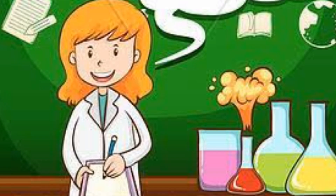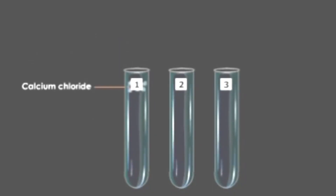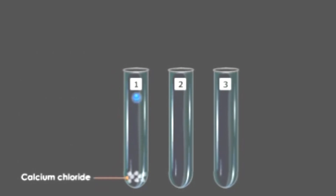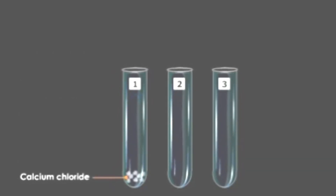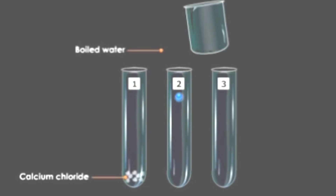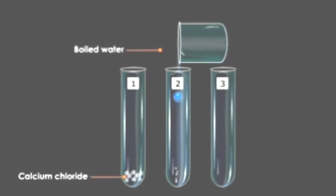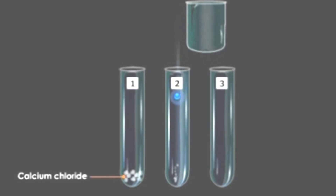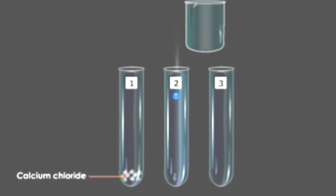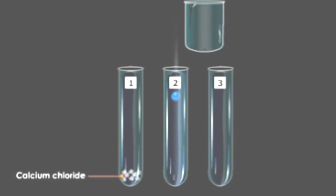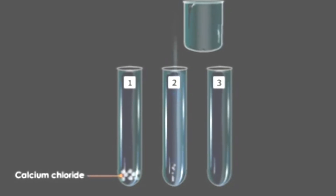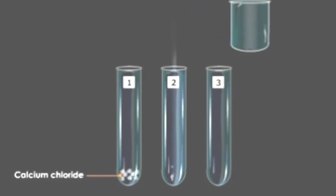Before we go into the details, let us perform an experiment. We have taken three test tubes numbered one, two, and three. In the first test tube, we have added a small amount of calcium chloride to help dry the air. In the second test tube, it is filled with boiled water so that dissolved oxygen is totally driven out. In the third test tube, we are pouring a small amount of water.